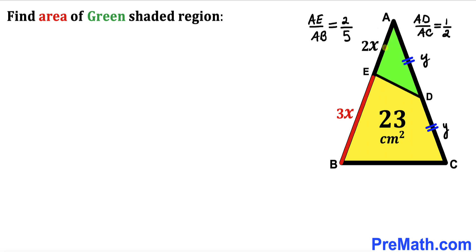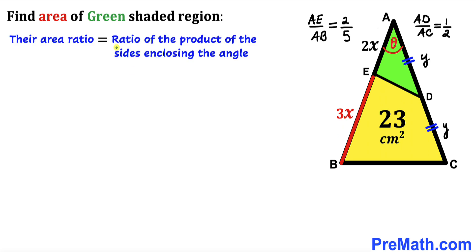Let's focus on angle BAC, which is the same as angle EAD. Let's label this angle as theta. We can see that angle theta is common to both the green triangle AED and the big triangle ABC. Therefore, their area ratio is going to be equal to the ratio of the product of the sides enclosing angle theta for each triangle.